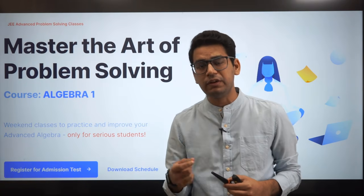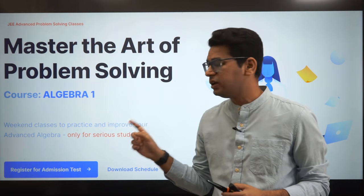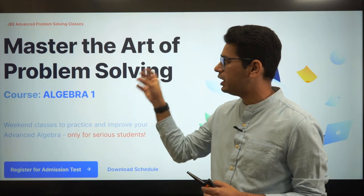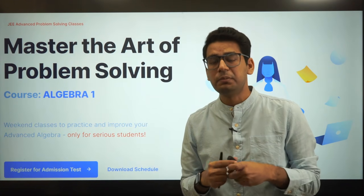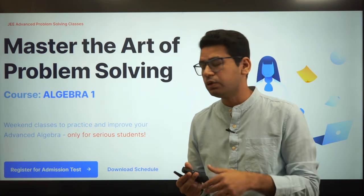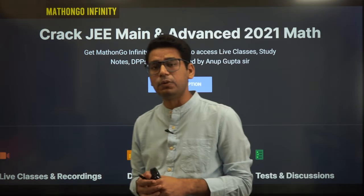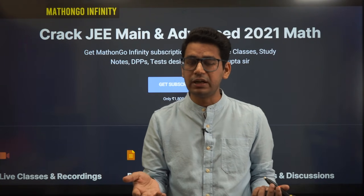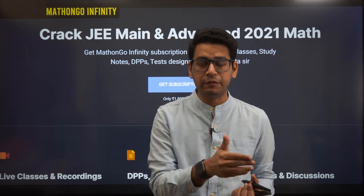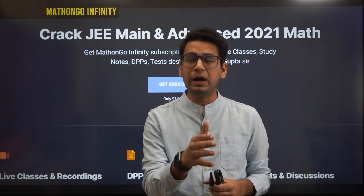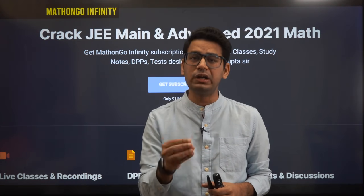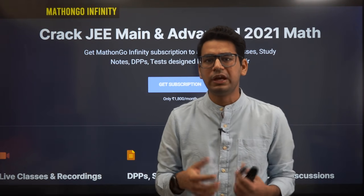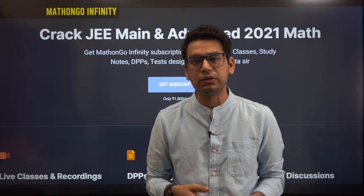There are two courses we are actively working on for 2021. If you want to study JEE Advanced and revise class 11 algebra, we have a course called 'Master the Art of Problem Solving' starting this Saturday — please enroll. The second course is 'Math On Go Infinity Program,' a monthly subscription. September's target is definite area and differential equations — enroll for highly structured, superlative quality content.